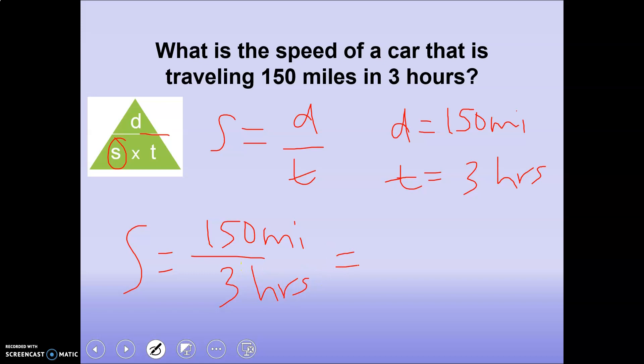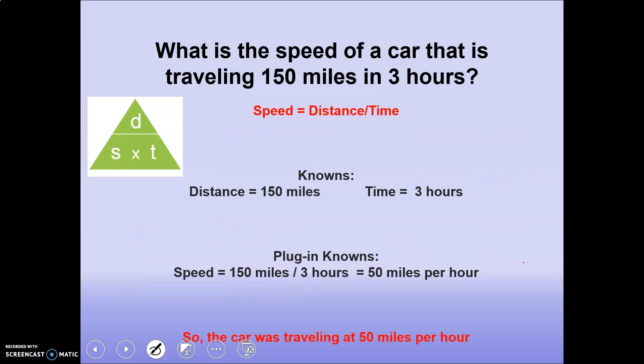So if you have 150 divided by 3, well 15 divided by 3 is 5. Add that zero back in, it's 50 miles per hour. And then here's another explanation typed up.